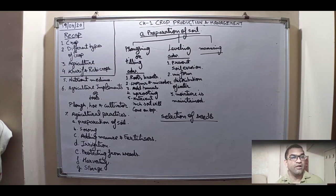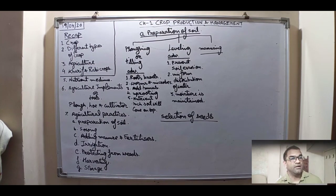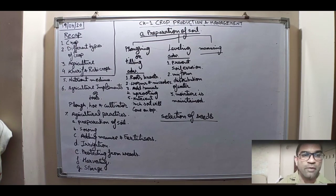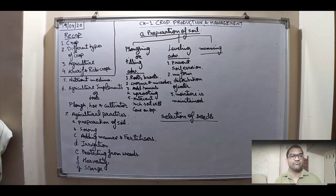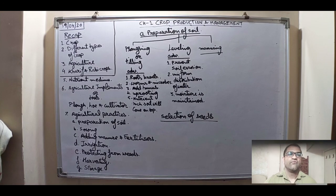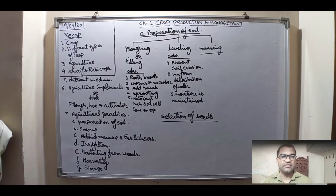We have kharif and rabi crops. But before that, why do we grow different kinds of crops in different states? It is because of the climatic conditions, types of soil, and the atmosphere. We have already divided the crops according to season.